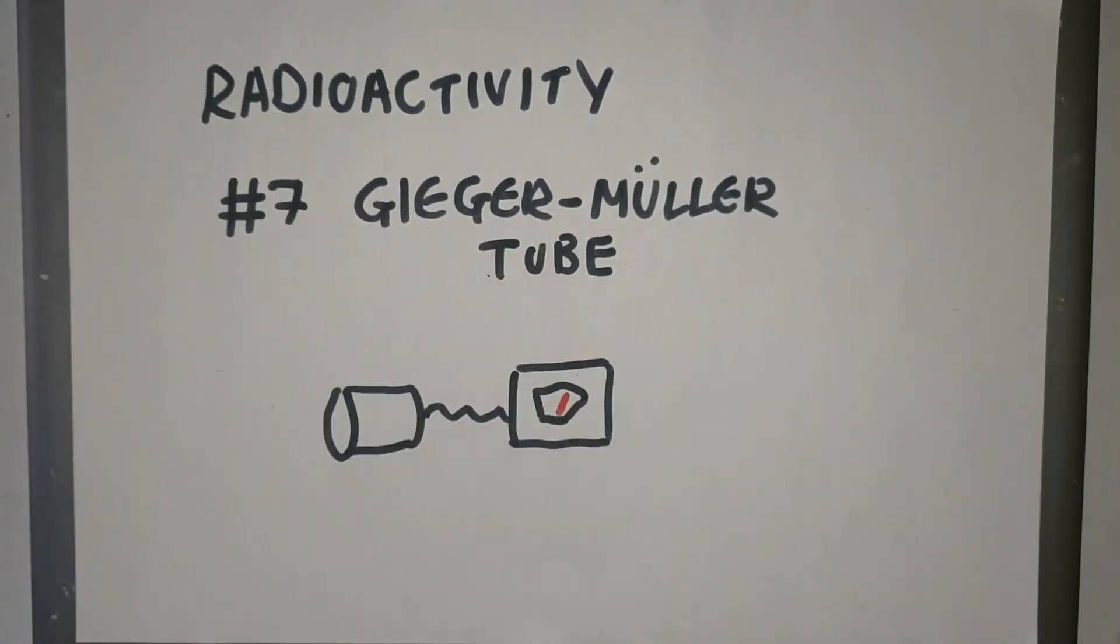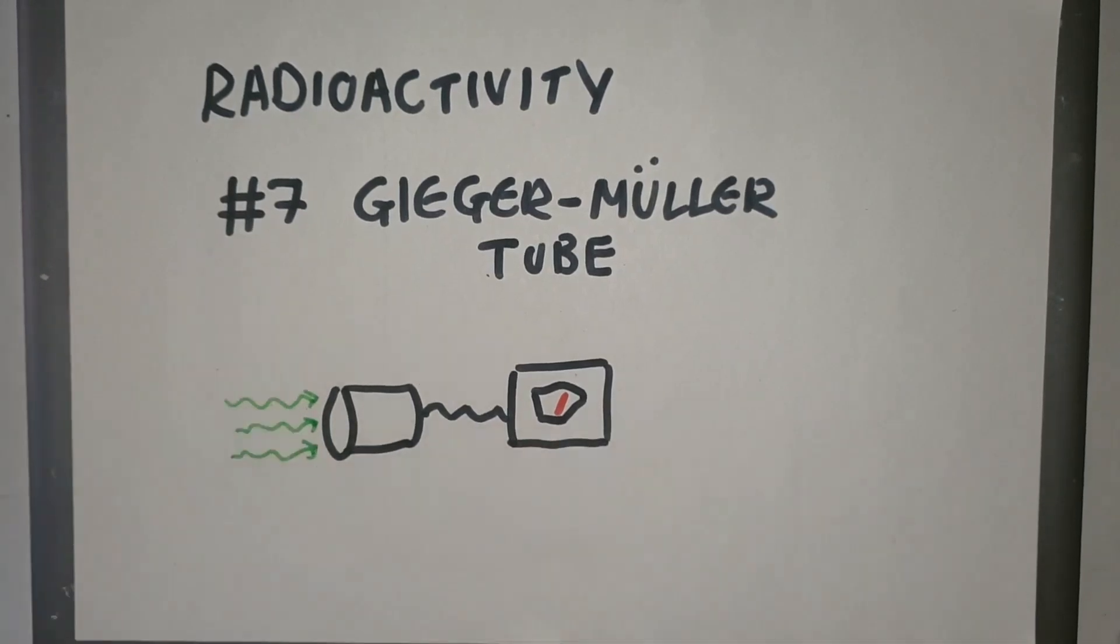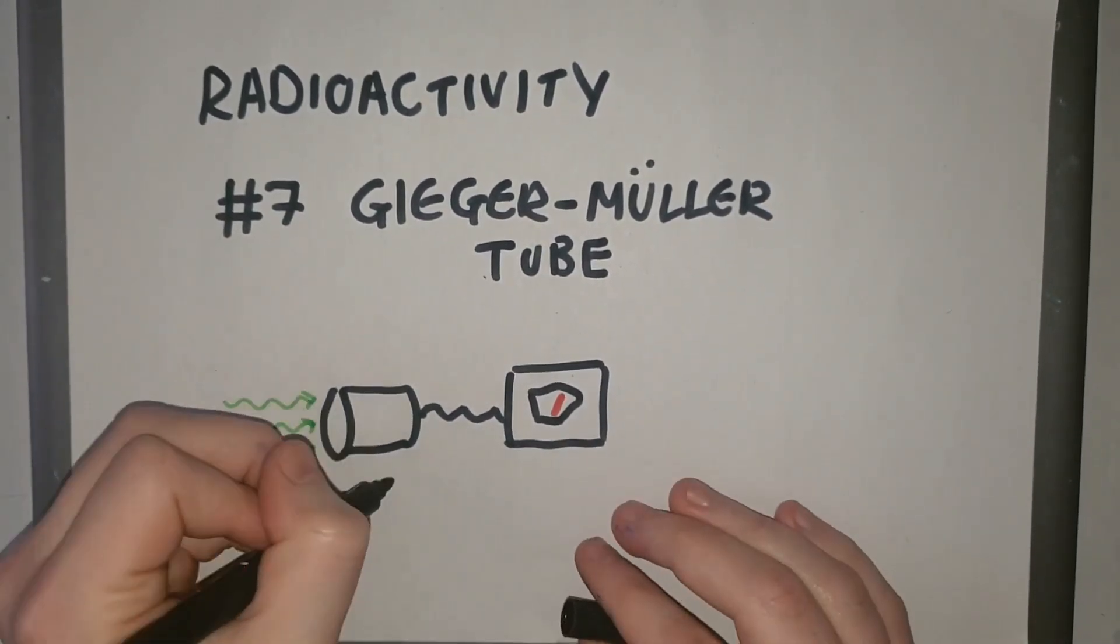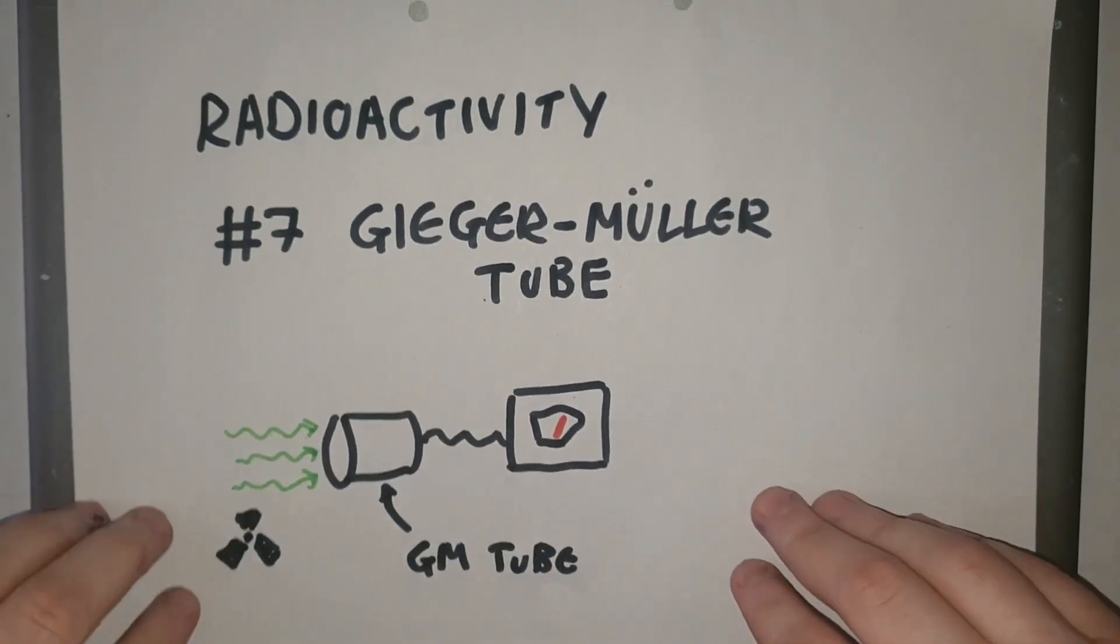We came across a device called the Geiger-Müller detector, a tool we use to measure radioactivity. Today we're going to look at the part of this device which detects radiation and how it detects radiation.